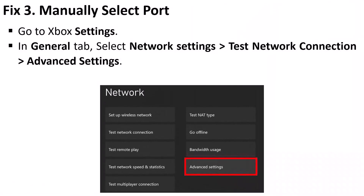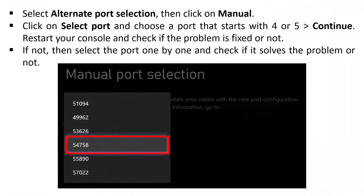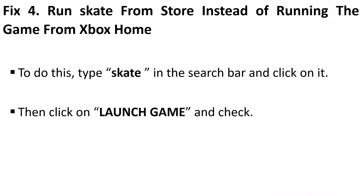Fix 3: Manually select a port. Go to Xbox Settings, in the General tab select Network Settings, Test Network Connection, then Advanced Settings. Select Alternate Port Selection, then click on Manual. Click on Select Port and choose a port that starts with 4 or 5, then continue. Restart your console and check if the problem is fixed. If not, select ports one by one to find which works.